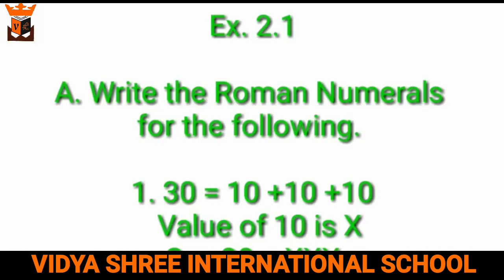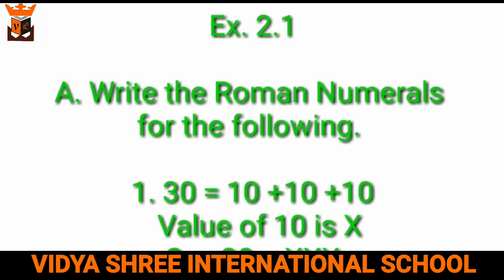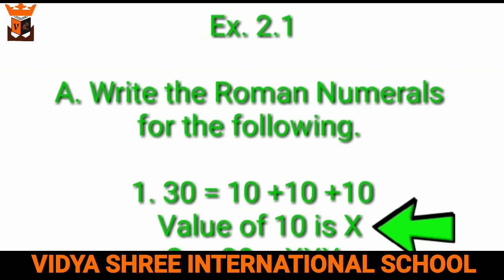Now let us try to solve the sums of exercise 2.1. The first question in your book is: write the Roman numerals for the following. Let us take the first example, 30. 30 means 3 times 10. We have the symbol X for 10, so we can write XXX for the number 30.